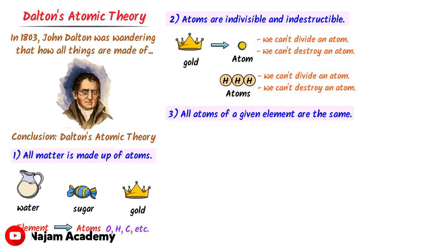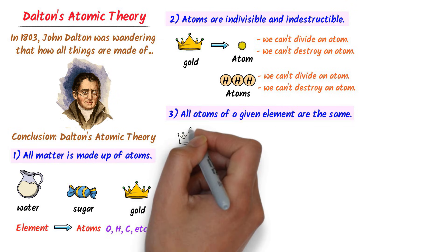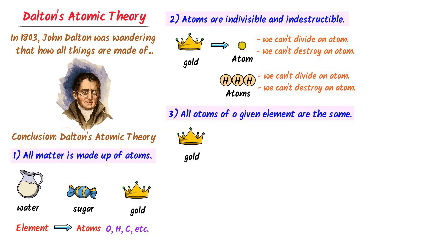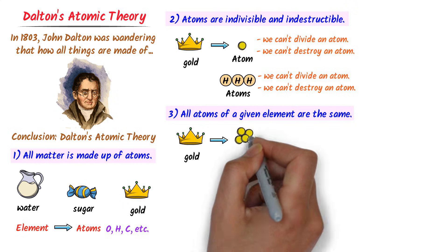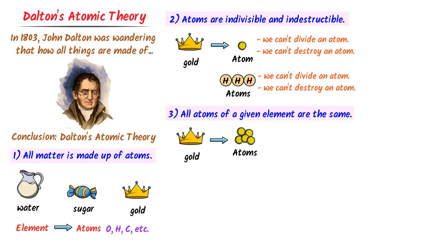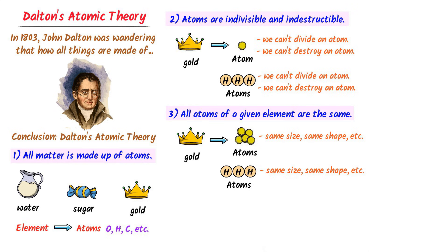Thirdly, all atoms of a given element are exactly the same. For example, consider gold. If I have 100 gold atoms, these 100 gold atoms are identical in size, shape, and in everything. Similarly, consider hydrogen atoms — they are all identical. Just like all one dollar or one rupee coins have the same shape and weight.